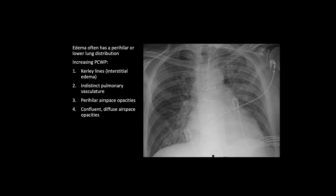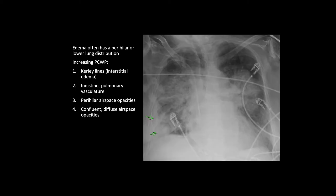As the edema worsens, you develop perihilar airspace opacities. In this case you see haziness and indistinctness of both hila and a hazy airspace opacity in the central parts of both lungs. The bases also tend to be involved in pulmonary edema, and in more severe edema you'll have more confluent dense airspace opacities, even progressing to almost whiteout in some cases.